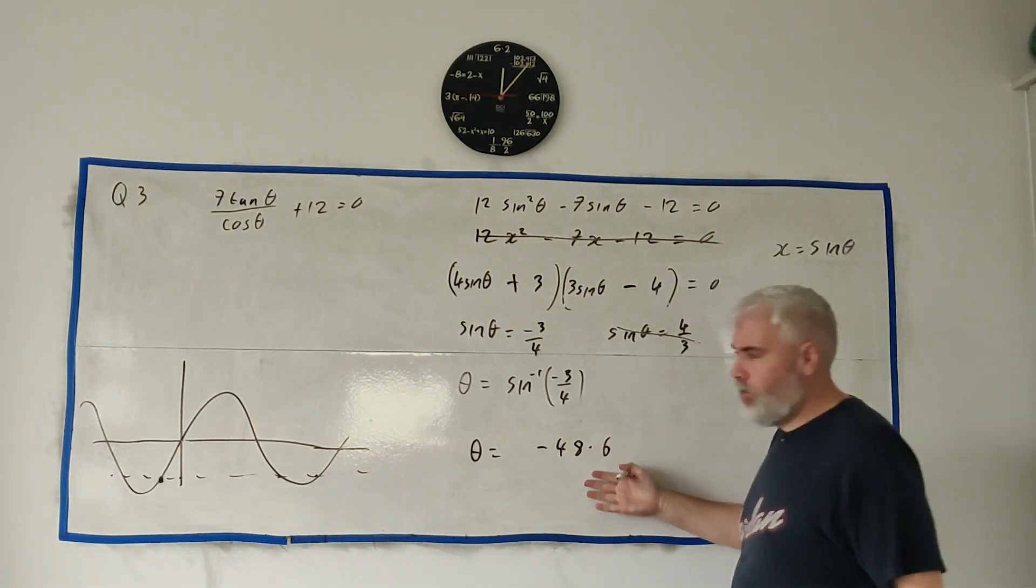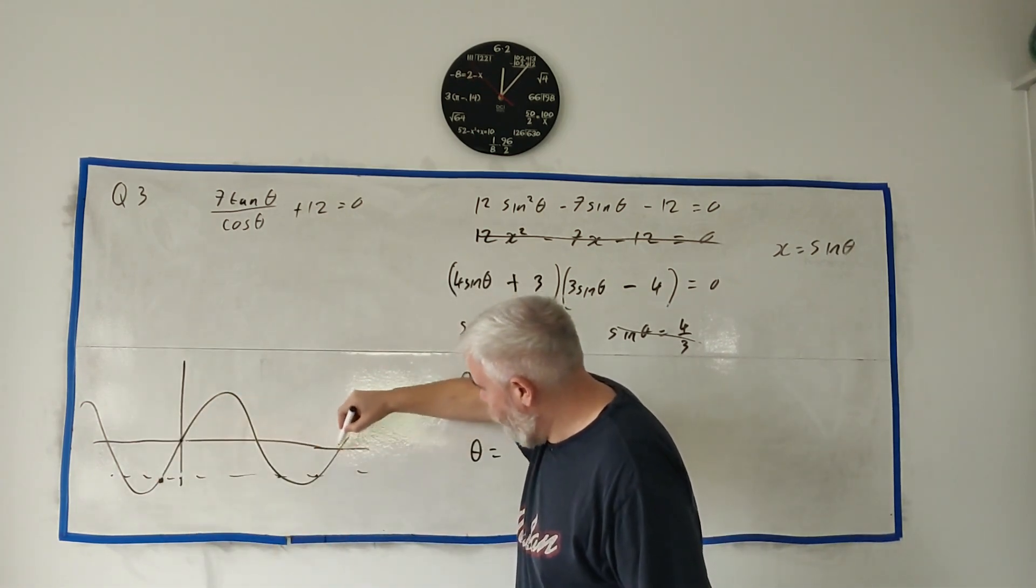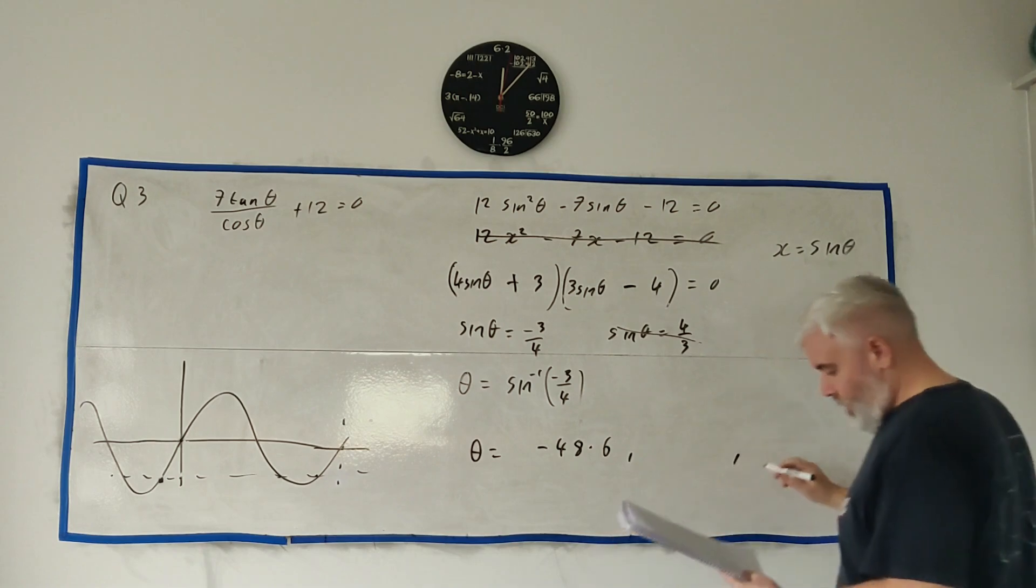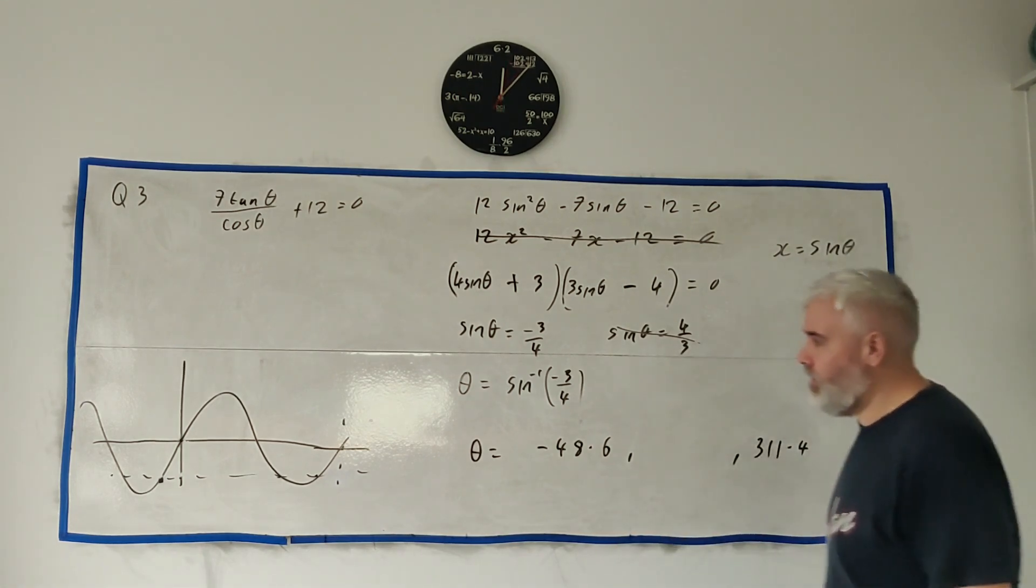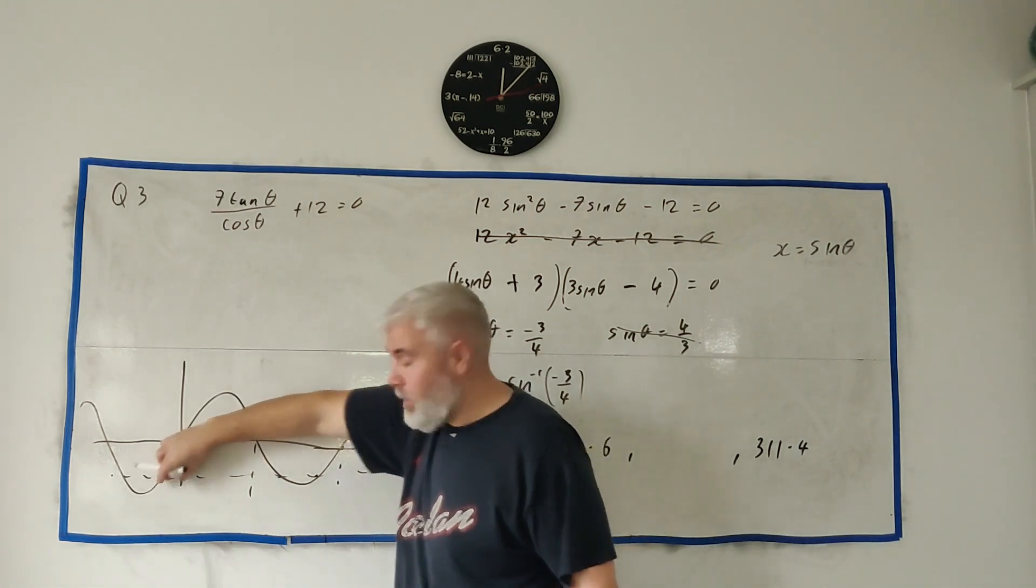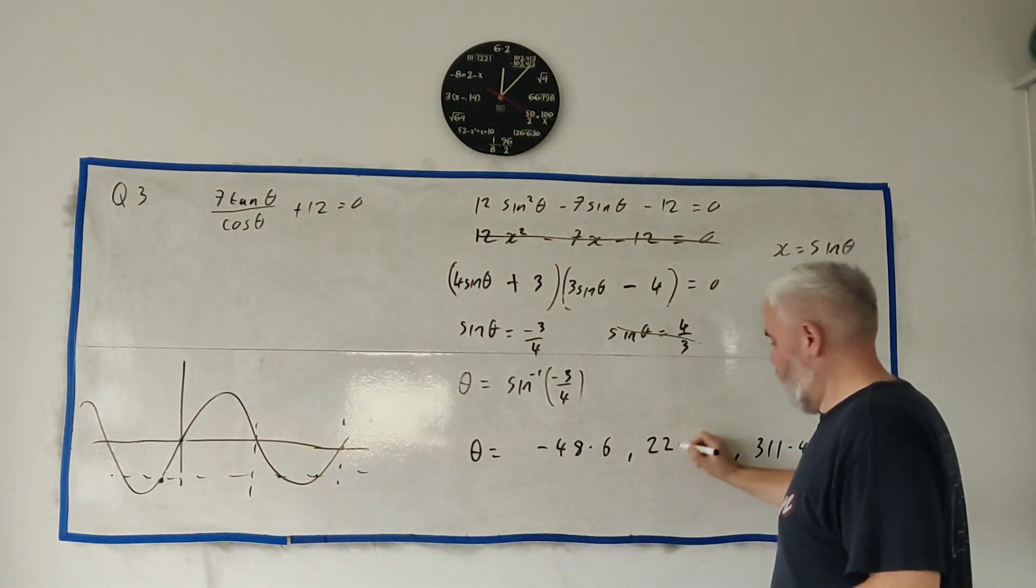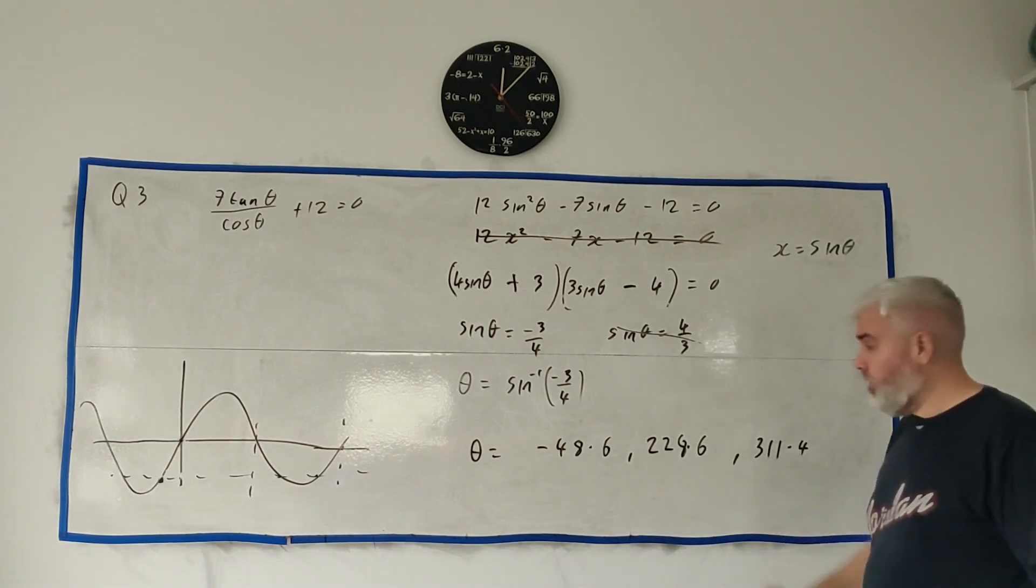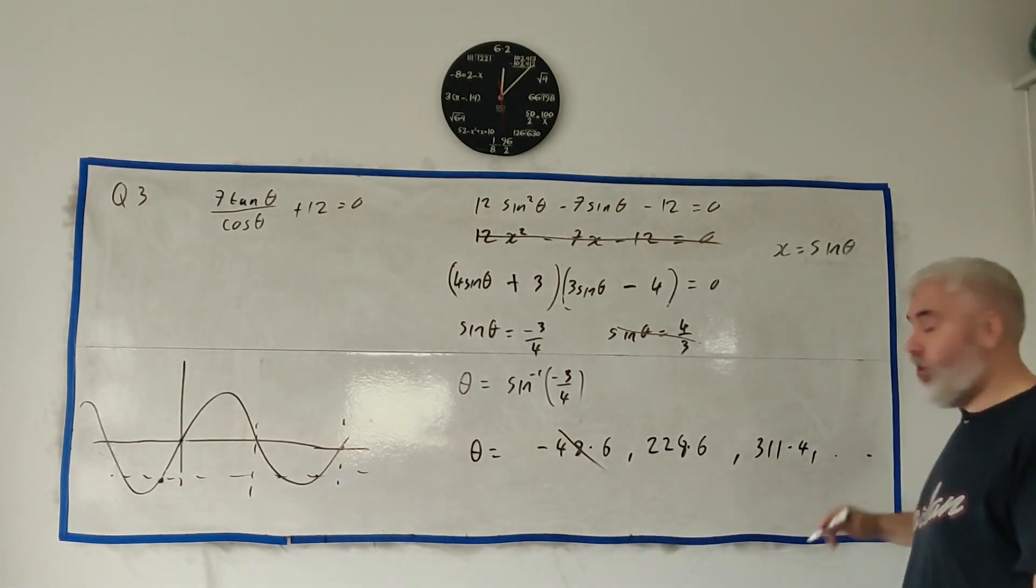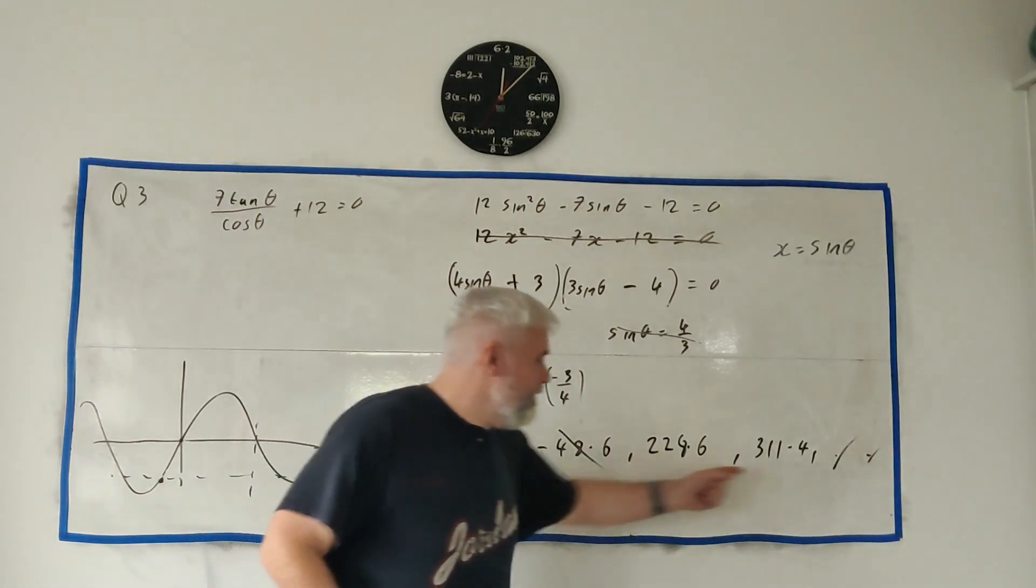The secret here is it's all symmetrical. If this is 49 away from this bit, this must be 49 away from this bit. So 360 minus 49 will give me the answer 311.4. That's an answer. This guy here, it's also symmetrical around this point. So if it's 49 away from there, it must be 49 away from here. That's 180 plus 49 is 228.6. Oh, sorry. I'd lose a mark. Need to put a line through that. That's not one of the answers. These are the two answers. Again, there's millions of answers over here. And none of them are right either. Because they told us the answer was between 0 and 360. So these are the only two answers.